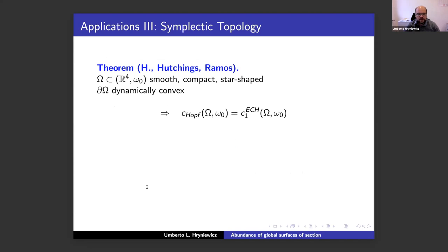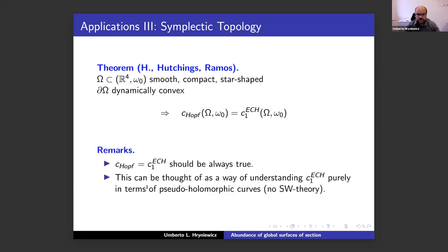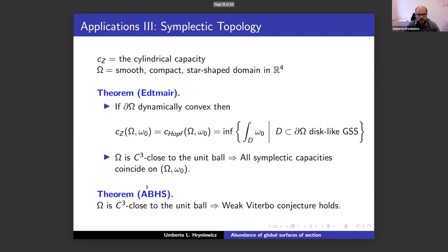Let me describe new applications to symplectic topology. Consider a smooth compact domain in ℝ⁴ with the standard symplectic structure, and define the number a_hop as the infimum of the symplectic areas of disk-like global surfaces of section on the boundary for the characteristic flow — with the convention that if there are none, the infimum is plus infinity. Taking advantage of global surfaces of section, we can produce a symplectic capacity. This is joint work with Michael Hutchings and Vinícius Ramos. We call this capacity c_hop: on a symplectic four-manifold X, one considers all symplectic embeddings of a star-shaped domain with dynamically convex boundary and takes the supremum of a_hop. In the dynamically convex case, this capacity equals the first ECH capacity, giving a description of that capacity in terms of global surfaces of section. Importantly, the proof of the existence of c_hop does not depend on Seiberg-Witten theory — it is entirely described in terms of holomorphic curves.